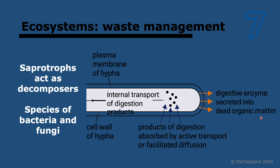Saprotrophs can be thought of as the waste management of the ecosystem — they're super important. Consumers don't eat all body parts; for example, we don't eat the bone in chicken wings, but bone is organic matter and contains chemical energy. That's where saprotrophs come in — they're the decomposers, mainly bacteria or fungi. They perform external digestion: they secrete digestive enzymes into dead organic matter first, then absorb the products through active transport or facilitated diffusion.